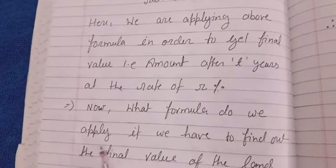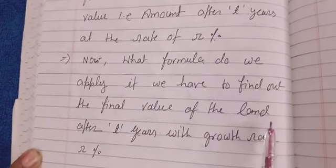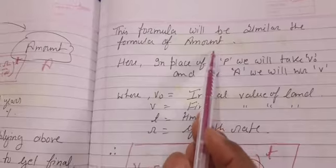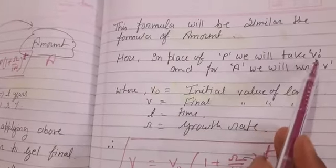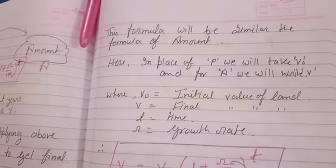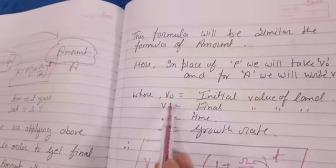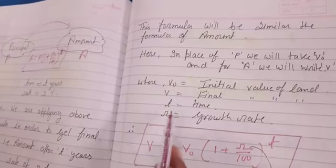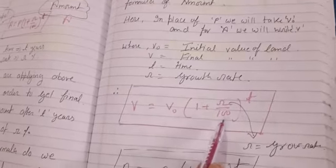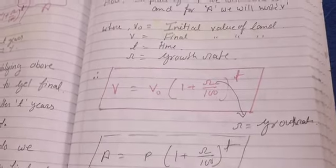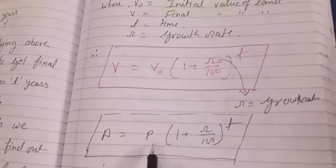What formula do we apply to find the final value of land or any other property after t years with a growth rate? The formula will be similar to the amount formula. In place of P (principal) we write V₀, and in place of amount A we write V. So V₀ is the initial value of the land, V is the final value of the land or any property whose price increased, t is time, and r is the growth rate. The formula is: V = V₀ × (1 + r/100)^t.